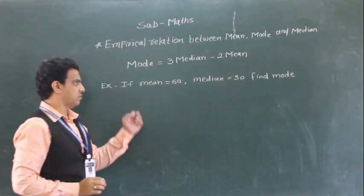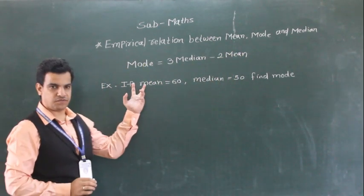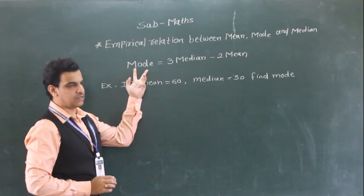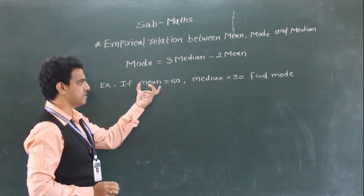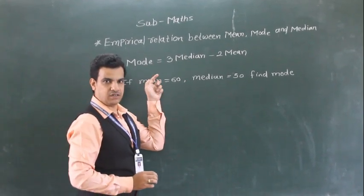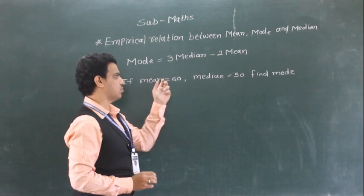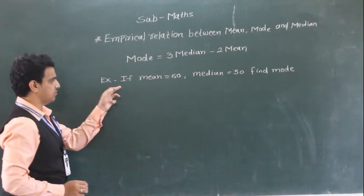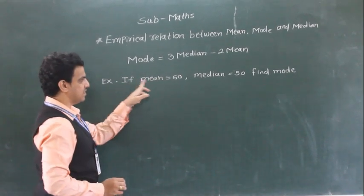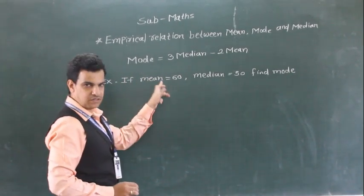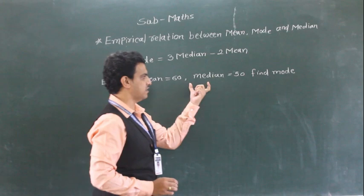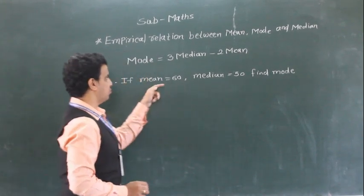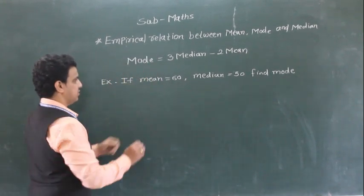So if among three quantities, if two quantities are given, then we can find the third quantity. We will take one example: here mean is 60 and median is 50. So we have to find mode using this relation.